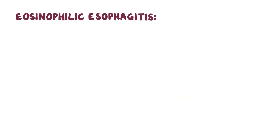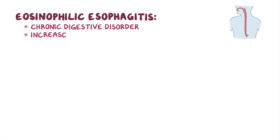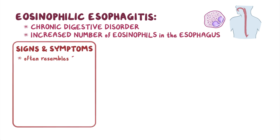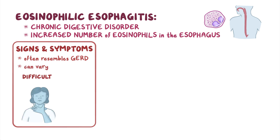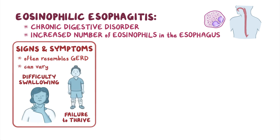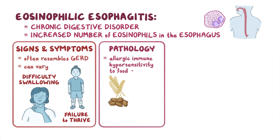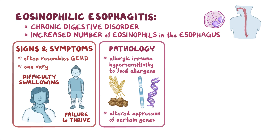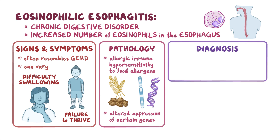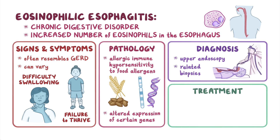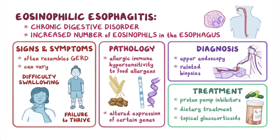Eosinophilic esophagitis is a chronic digestive disorder in which there is an increased number of eosinophils in the esophagus. The signs and symptoms often resemble GERD and can vary from difficulty swallowing to failure to thrive in children. The increased eosinophils are typically caused by allergic immune hypersensitivity to food allergens and altered expression of certain genes. After a clinical evaluation, diagnosis is established by an upper endoscopy and related biopsies. Most people can be treated with proton pump inhibitors, dietary treatment, or topical glucocorticoids or steroids.